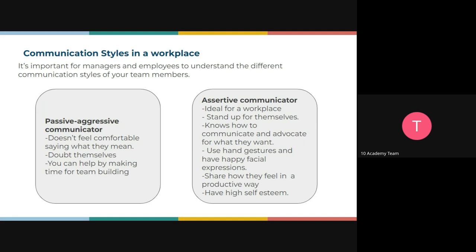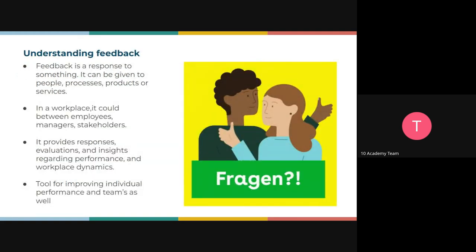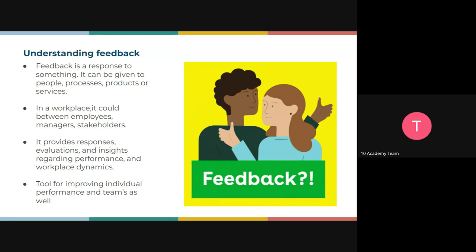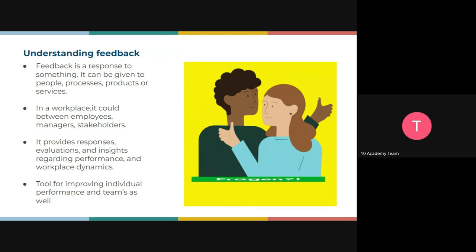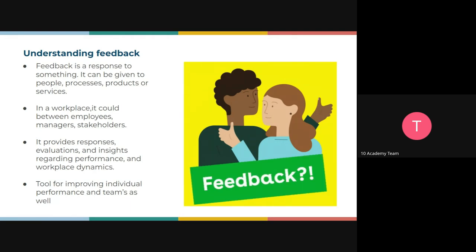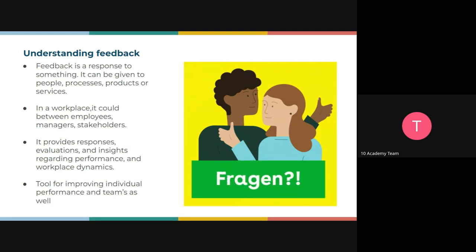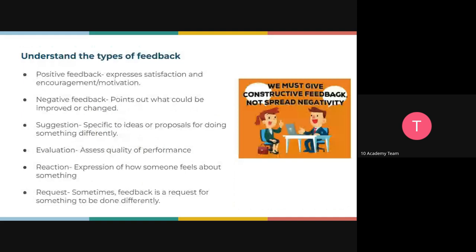Now let's talk about understanding feedback. Feedback is really important — it is a response to something, maybe given to people, processes, or products. In the workplace this could be between team members, managers, stakeholders, colleagues — any of those. Understanding feedback involves providing a response and evaluation. So how do we give feedback that won't come out on the wrong foot? Let's look at the different types of feedback we have.